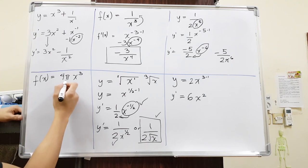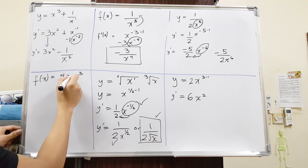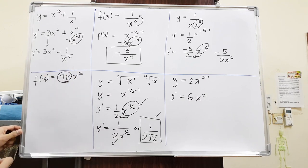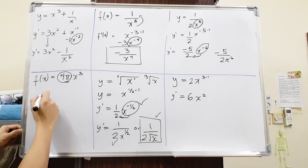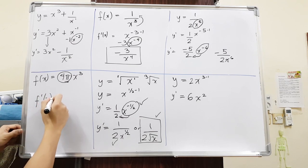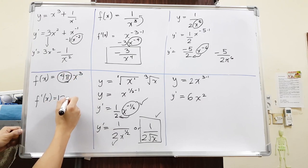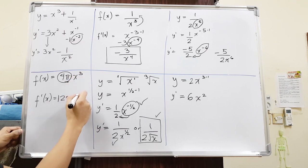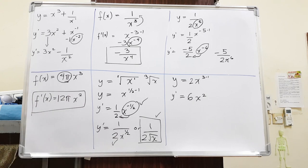Lastly, we have 4πx cubed. Pi is a number — it's 3.14 and so on — a very long number, so it's considered just one number. It's not a variable you differentiate. So 3 comes forward: 3 times 4π is 12π, and x to the power of 3 minus 1 is 2. The derivative is 12πx squared. That is how you differentiate using the power rule.